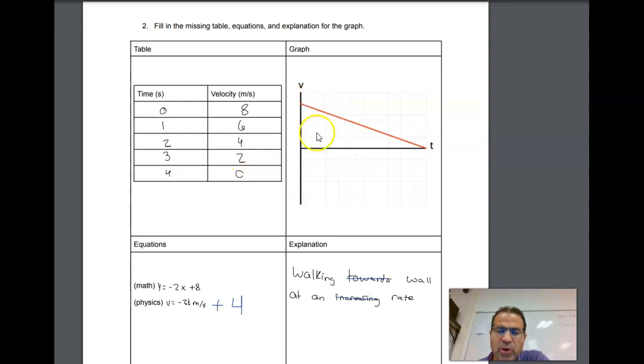The velocity is zero. So the whole time they're moving away from the wall, but they are slowing down. Try to visualize that.